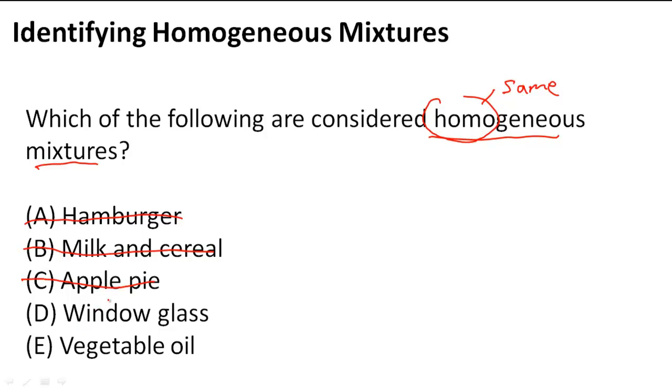D, window glass. Now window glass is interesting because when you make window glass you combine different compounds together but you can't tell the difference. It comes out as one uniform piece of glass. So this is actually a mixture but we can't tell the difference between its different parts so that must mean that it's a homogeneous mixture. So this is our first homogeneous mixture.